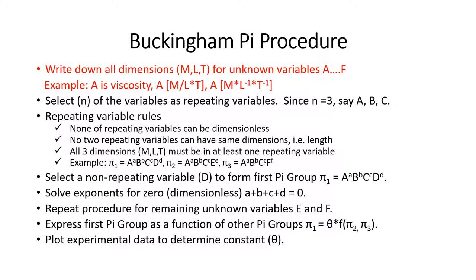Here's the procedure. First, write down all the dimensions — mass, length, time — for each variable. Say you had variables a through f; variable a might be viscosity expressed as mass per length time. Next, select n — three — of the variables as repeating variables; these will appear in each Pi group. For this example, just pick the first three: a, b, c — those are the repeating variables.